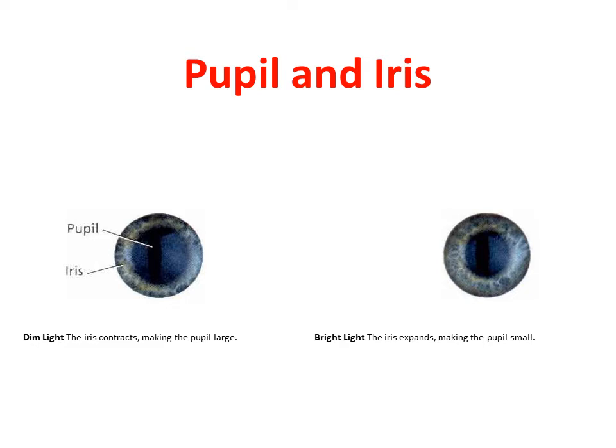The iris is a ring of muscle that contracts and expands to change the size of the pupil. The iris gives the eye its color. In most people the iris is brown; in others it is blue, green, or hazel.